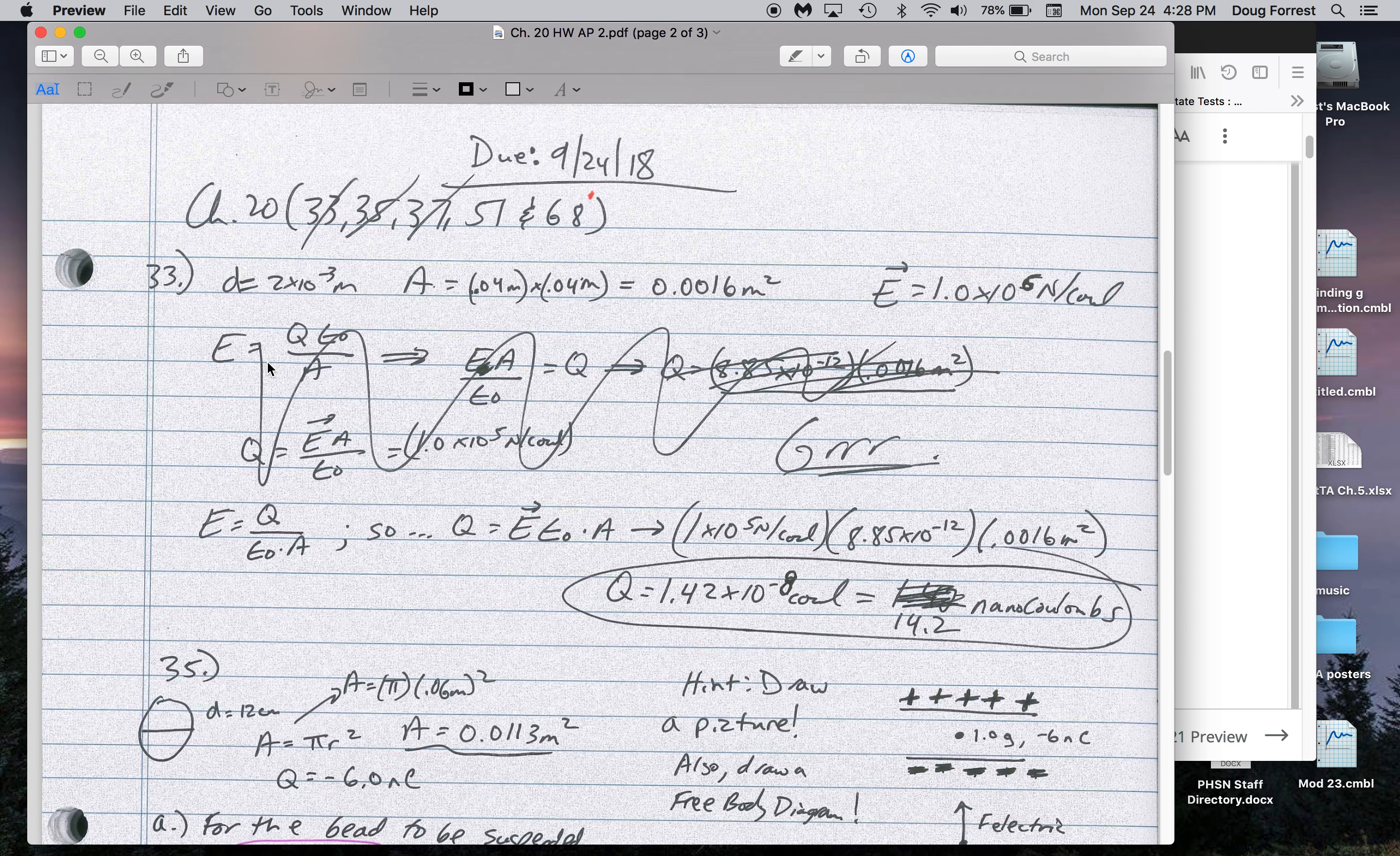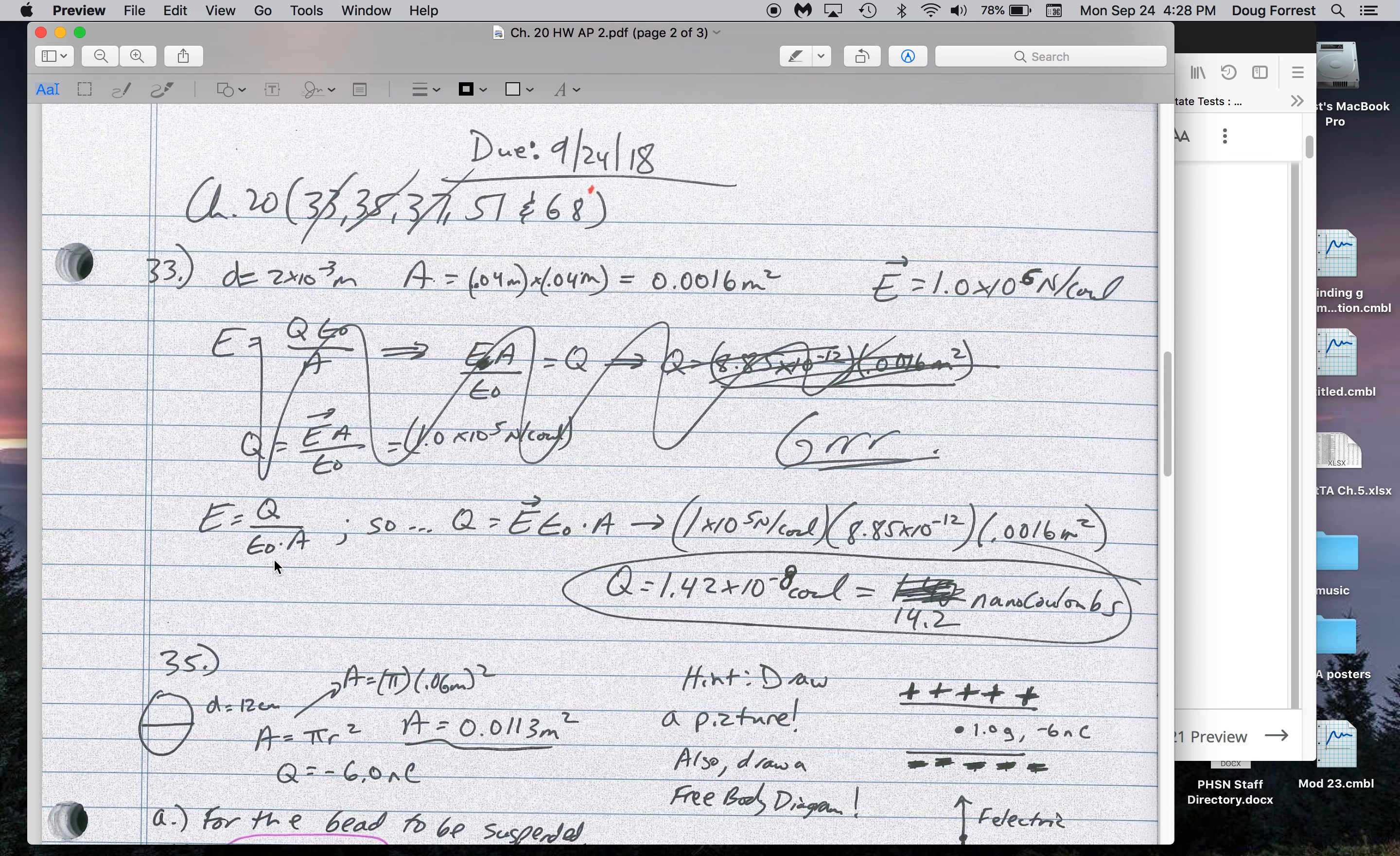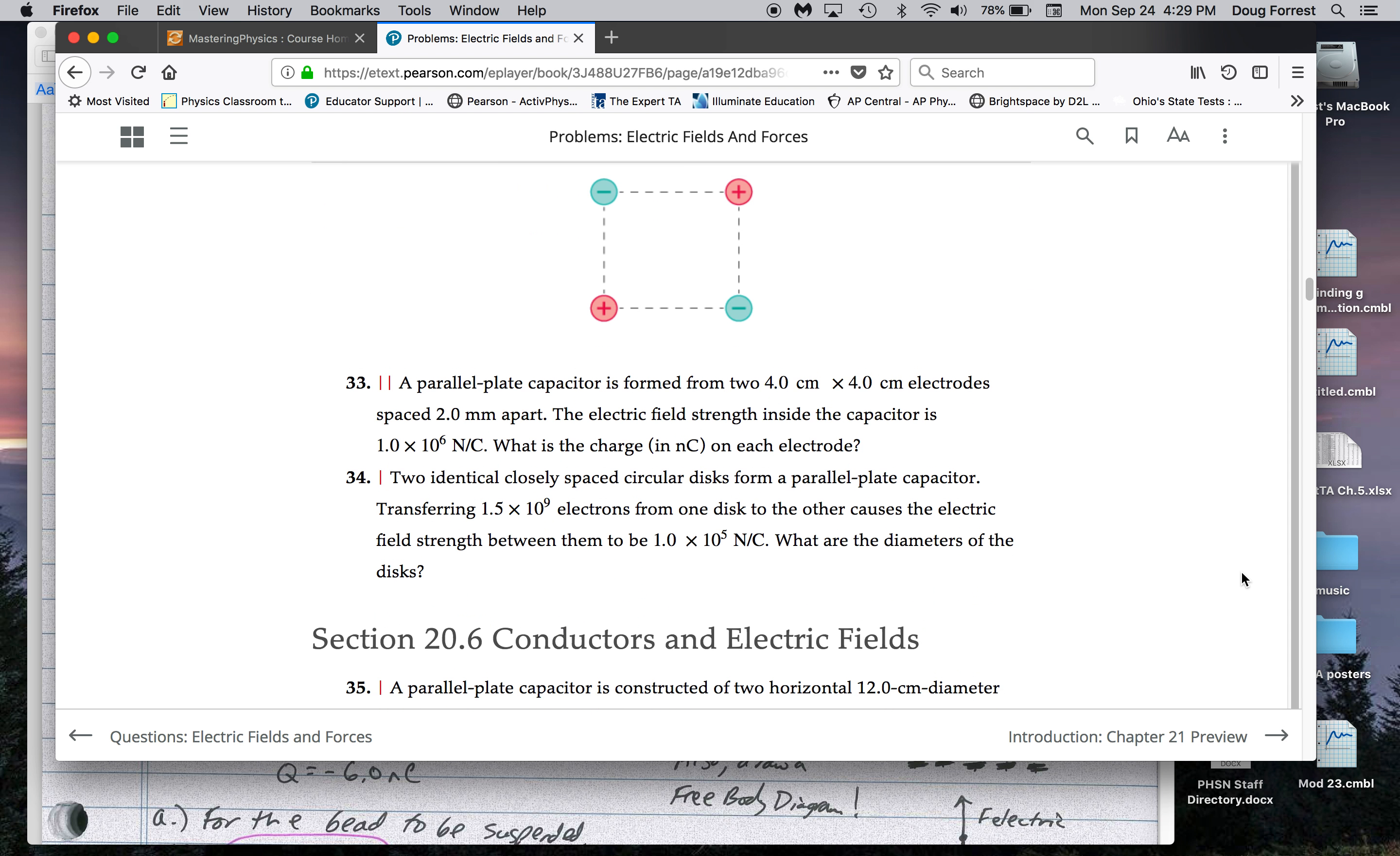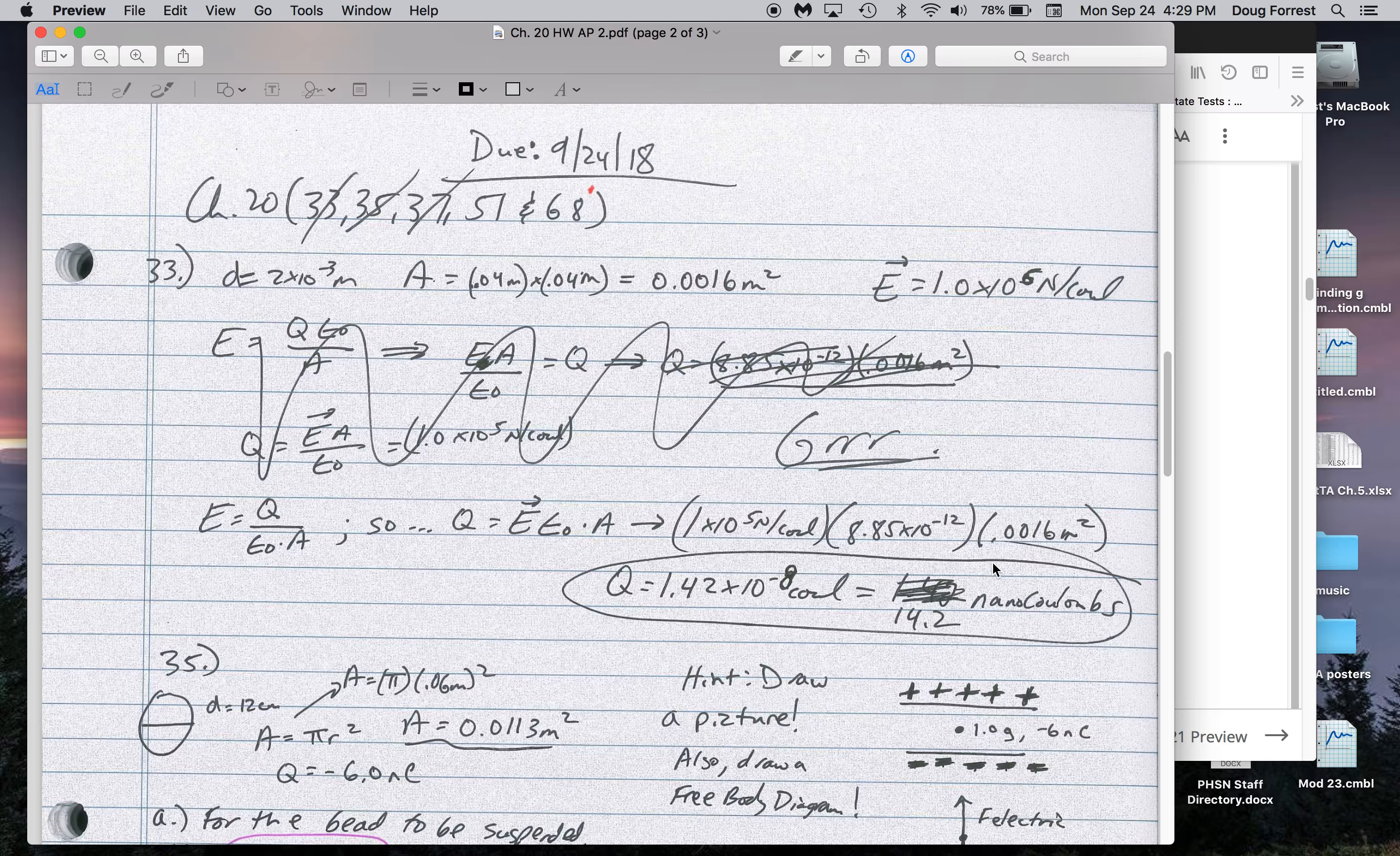For 33, as I said, I had forgotten this formula. I knew it was Q over A, but I had forgotten that the E sub 0 was in the bottom. So it's charge per area and then divided by that constant. So looking at that, that's how I get the charge on either of the capacitor plates. I want to check this real quick, make sure I'm thinking about the right problem. Yup, here's the problem. The area you get, I'm doing 0.04 meters times 0.04 meters.